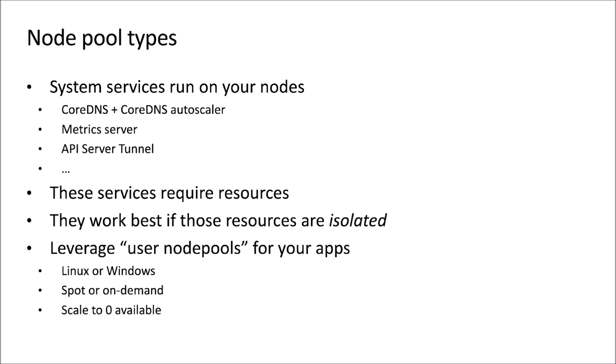Within user node pools, you can run either Linux or Windows pods. They can be made up of either Spot instances or on-demand. Critically, they can scale down to zero nodes. While the system services need to continue running to keep the cluster available, if your application has no work to do, you can scale the associated infrastructure down to zero and really manage the resources associated with your user node pools.